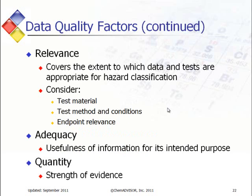The other factors are covered on this slide. Relevancy covers the extent to which the data and the test are appropriate for the hazard classification, considering the actual substance or test material itself, the test method and its conditions, and the relevance of that particular endpoint to your particular purpose. Adequacy addresses how useful the information is for its intended purpose, and quantity addresses how strong the evidence exists for that piece of data.